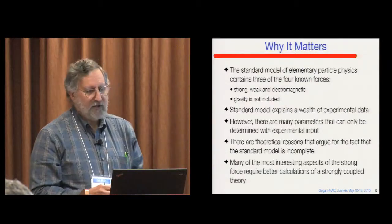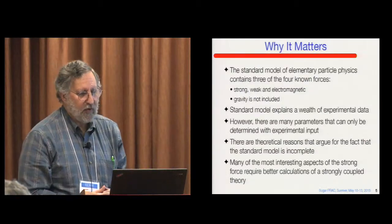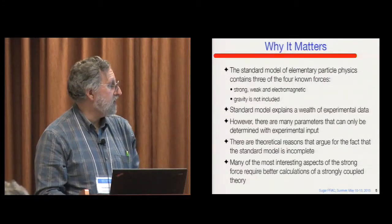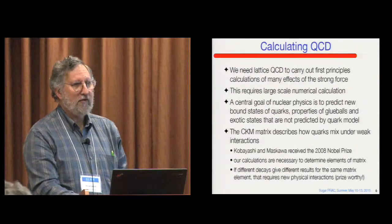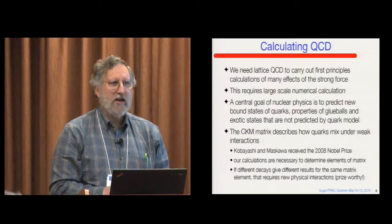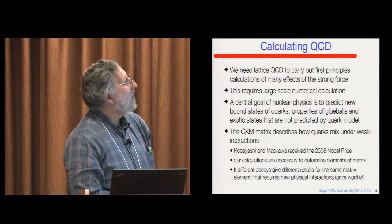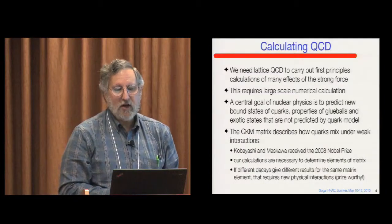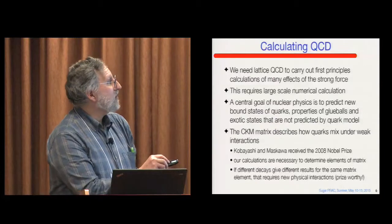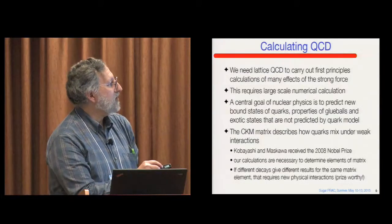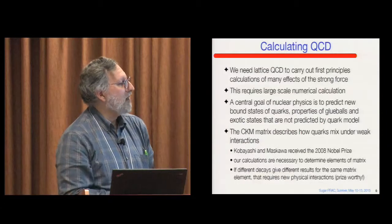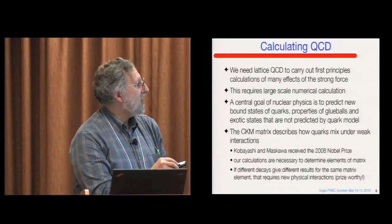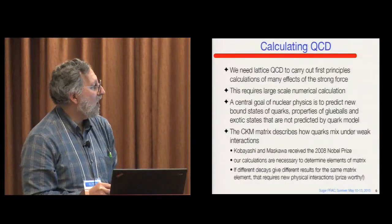So it turns out that many of the aspects of the strong force that we'd like to calculate, that we'd like to be able to compare with experiment, required us to do these strongly coupled quantum field theory calculations for which the lattice is the current best technique. If you're really clever, maybe you can come up with another technique and then I can retire in peace and save a lot of computer time. So right now, we do need lattice QCD to do these types of calculations. So on the nuclear physics side, we'd like to predict these bound states that I mentioned, particularly glue balls, which are states that don't actually include quarks and anti-quarks at all, but are just gluonic excitations. And then the exotic states that include both gluonic excitation of a quark-anti-quark bound state.